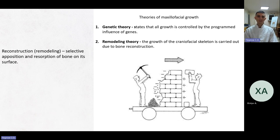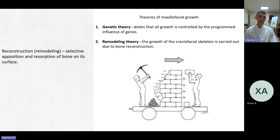The first theory is the genetic theory. It states that all growth is controlled by the programmed influence of genes. The next theory is the remodeling theory. It states that the growth of the craniofacial skeleton is carried out due to bone reconstruction. Reconstruction or remodeling is a selective apposition and resorption of bone on its surface.